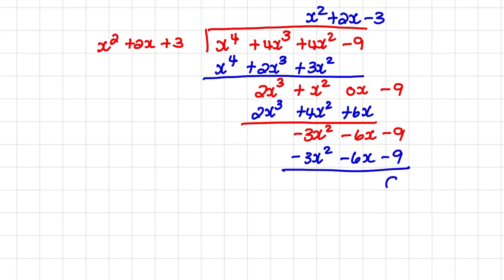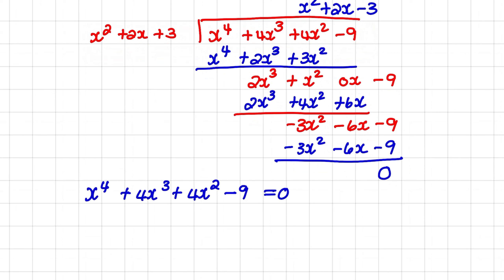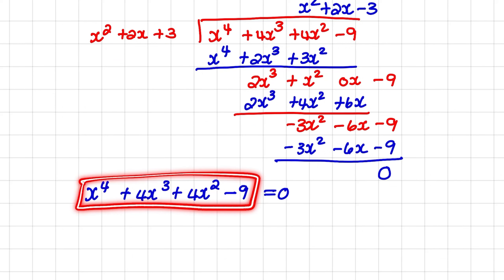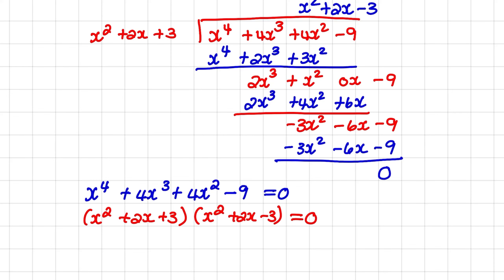So there is no remainder. There we have shown that x squared plus 2x plus 3 is a factor to this expression. That means that we can take our original expression and rewrite it as x squared plus 2x plus 3 times x squared plus 2x minus 3, which is the result of our long division.